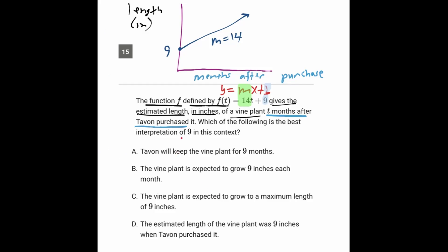So now the question is asking us, what is our interpretation of the 9? Well, the 9 is right here. And that's the starting y value, the y-intercept. So it's our starting amount of whatever y is, which in this situation is the length.